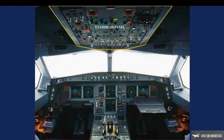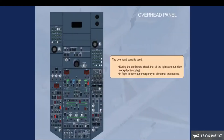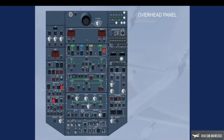Click on the overhead panel area to display it. The overhead panel is used during the preflight to check that all the lights are out — the dark cockpit philosophy — and in flight to carry out emergency or abnormal procedures. The central part of the overhead panel is dedicated to aircraft systems such as air conditioning, electrical, fuel, hydraulic, and fire. The most frequently used controls are located on the bottom part.